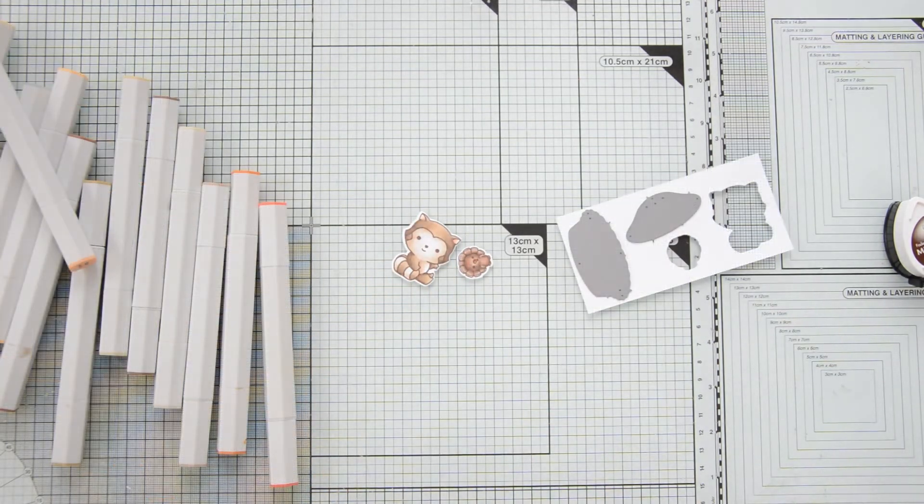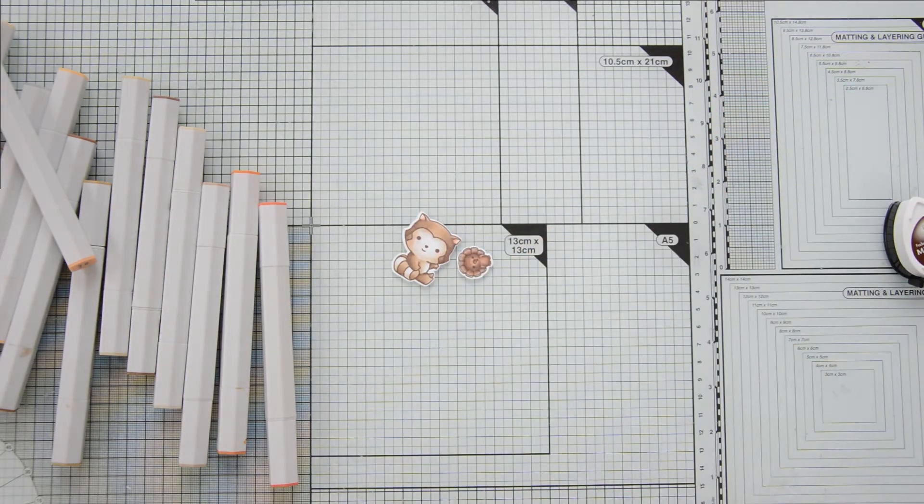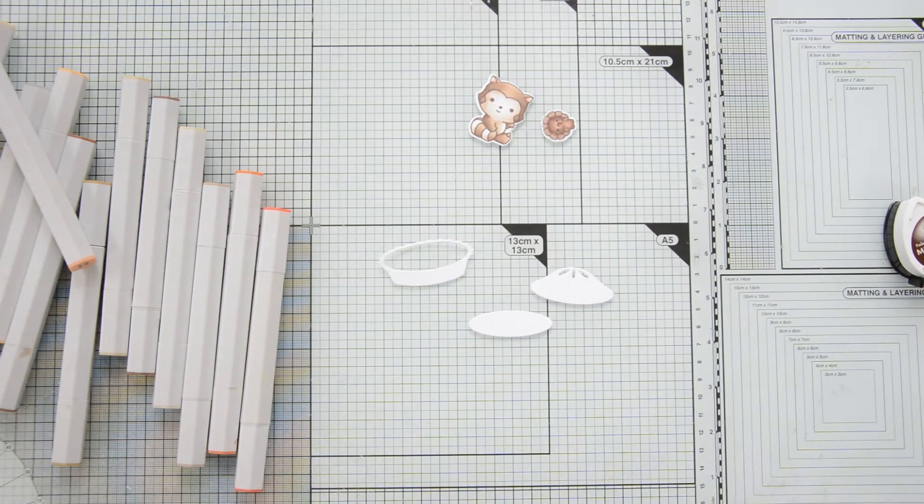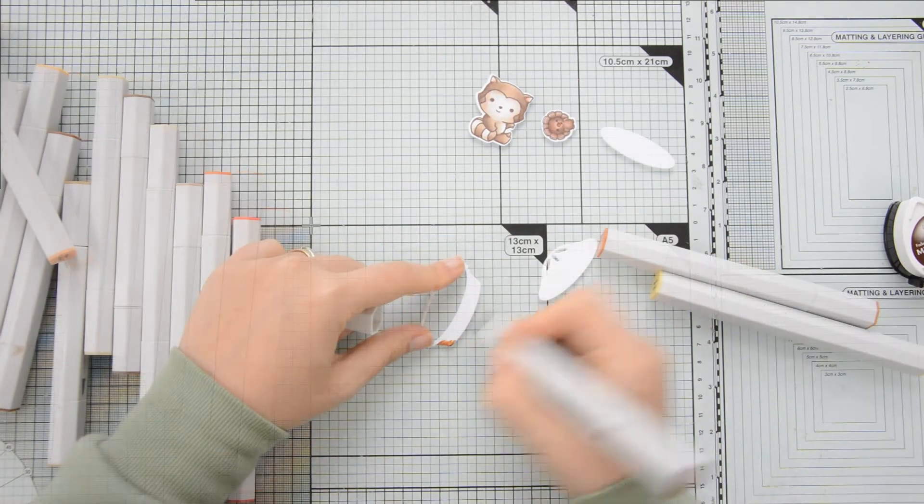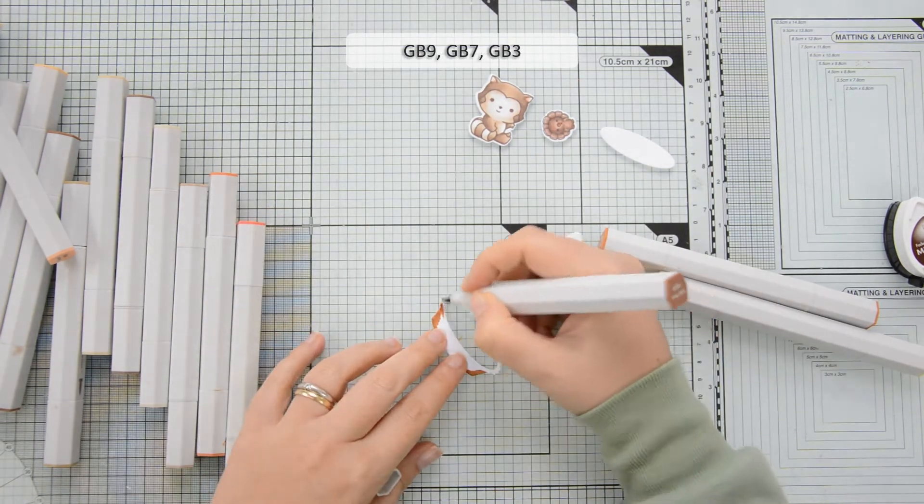I am then going to create a die cut pie using the Cutie Pie dies by Sugar Pea Designs. I'm die cutting my shapes out of some Neenah Solar White 110 lb cardstock because I'm going to add some coloring to these die cuts with my Illustrator markers again.